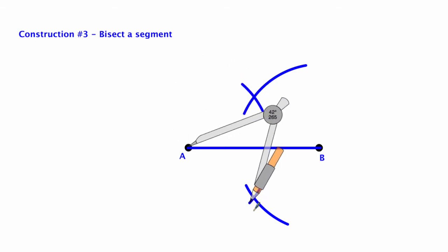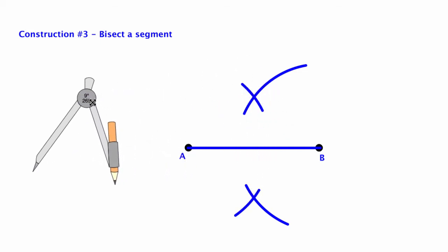And you'll see now that I have two X's, and through those X's I'm going to draw a line that should bisect the segment.